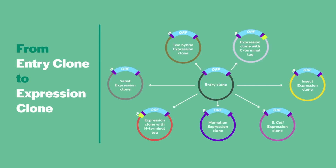Once you have your entry clone or clones, you need to create your expression clones. You will choose the appropriate destination vector. Destination vectors are engineered to accommodate everything from mammalian expression to two-hybrid screening. The identical LR reaction is used no matter which expression clone you are building. Gateway technology also allows you to combine multiple entry clones into a single expression vector in one step.